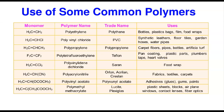Here is a list of common polymers with their monomeric units, trade names, and uses. Ethylene polymerizes to form polyethylene — trade name polyethylene — used in making bottles, plastic films, food wraps, and more. Vinyl chloride forms polyvinyl chloride (PVC), used in synthetic leather, floor tiles, garden hoses, and water pipes. Propylene forms polypropylene — used in making carpets, pipes, bottles, and artificial turf.